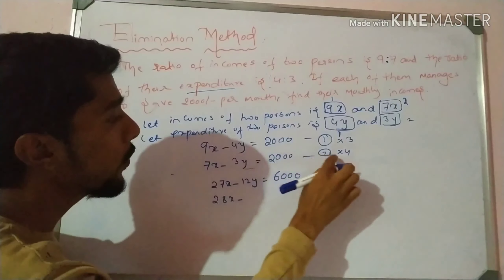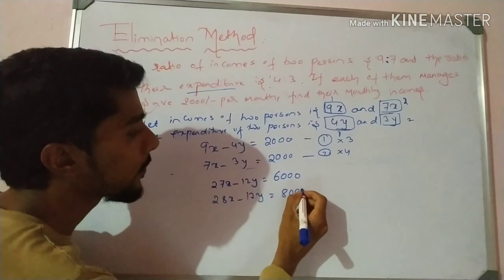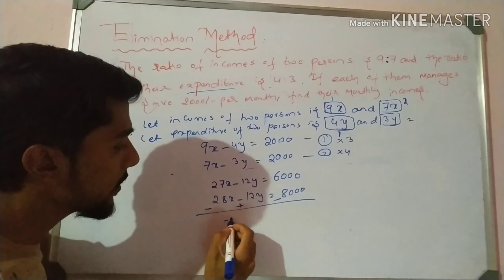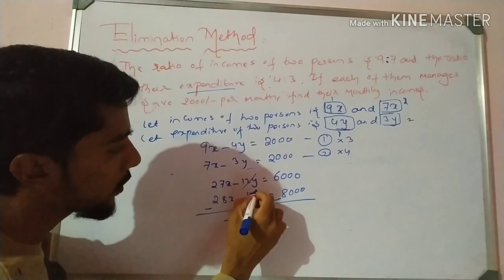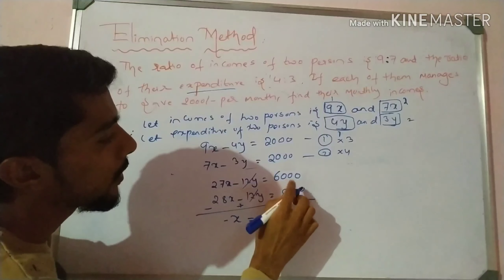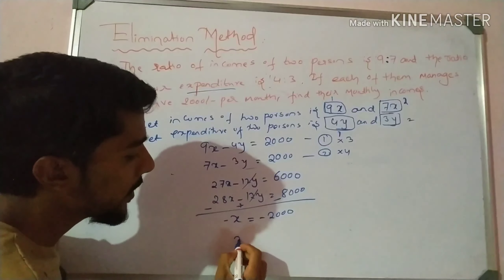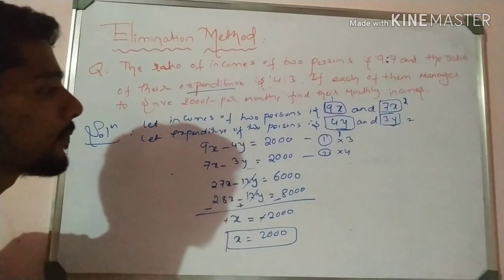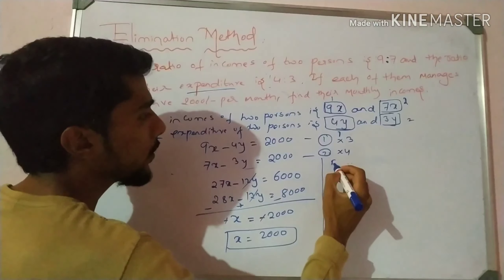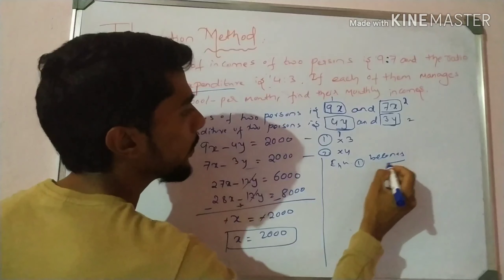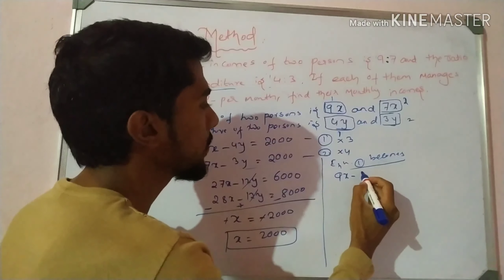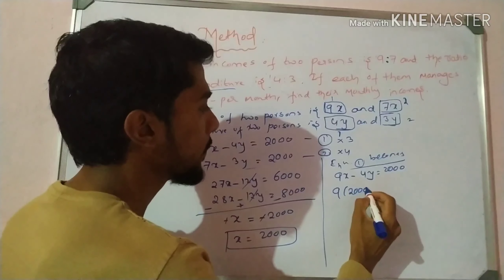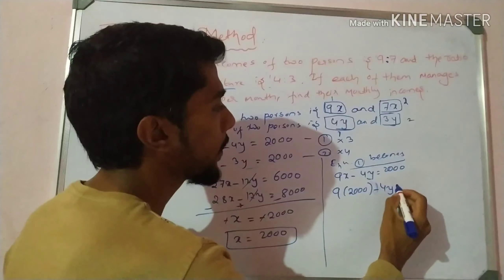If I want to cancel x, both coefficients of x must be the same. In the 9 and 7 tables there is no common number directly. But if I multiply the first equation by 3 and the second equation by 4, the coefficient of y becomes 12 in both cases — so 12 and 12 cancel each other. That is the elimination method: we multiply some number to balance the equations, then cancel.